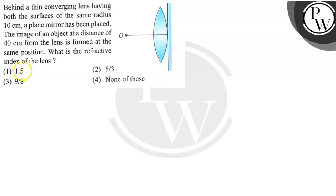Hello guys, let's see the question. The question says behind a thin converging lens having both the surfaces of the same radius 10 cm, a plane mirror has been placed. The image of an object at a distance of 40 cm from the lens is formed at the same position.